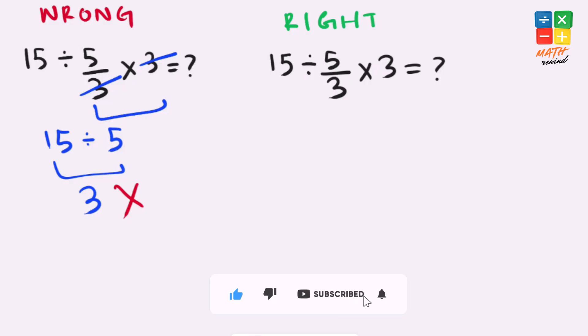Because according to the order of operations, we must solve parenthesis, then exponents, then multiplication and division, and finally addition and subtraction. Remember, if in any expression you have both multiplication and division present, you must work from left to right. And same applies to addition and subtraction.